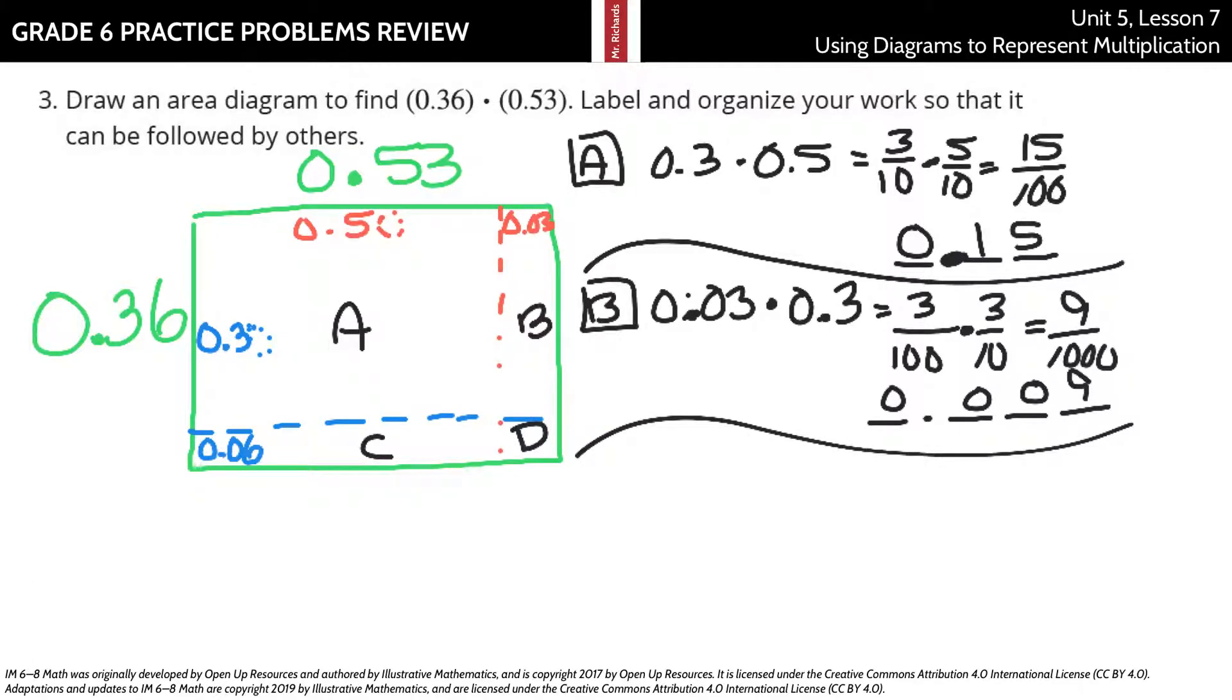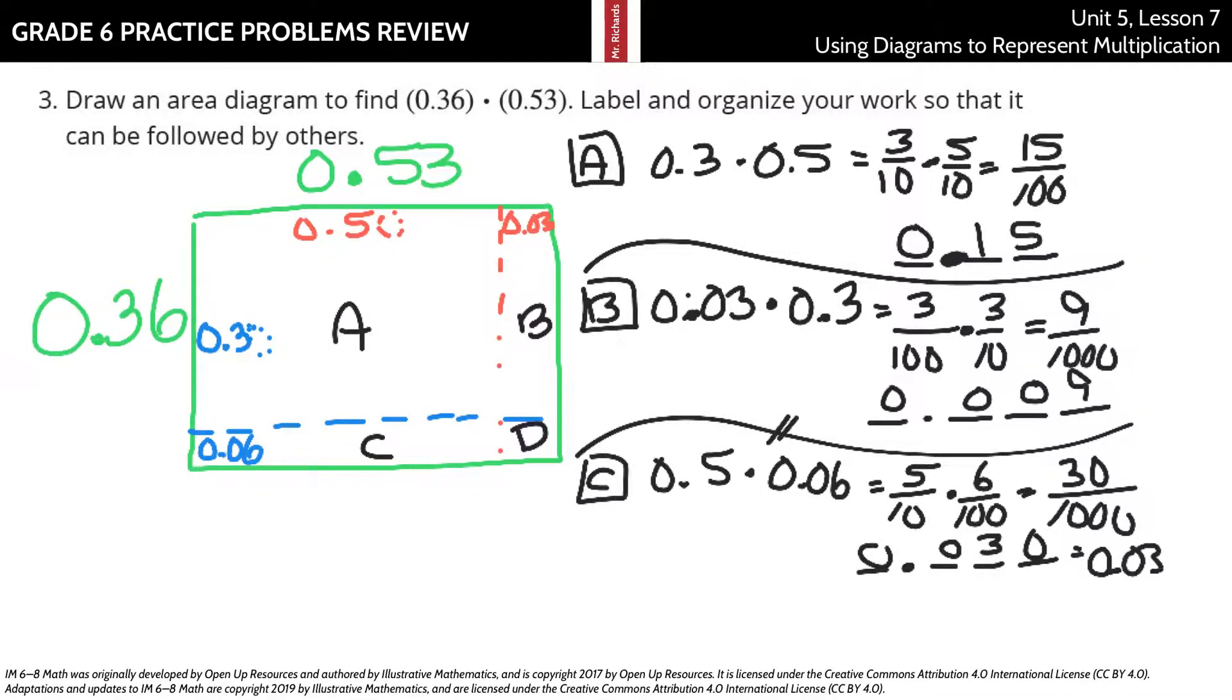What about C? C, it appears we have our 0.06, and our longer side is this 0.5. And so we'll have 0.5 times 0.06. 0.5 times 0.06 is 0.030 or 30 thousandths, which of course is the same thing as 3 hundredths as well.